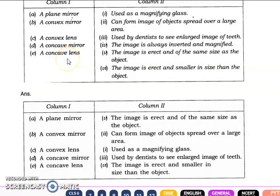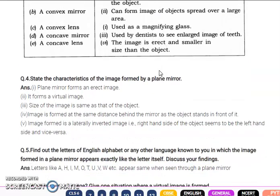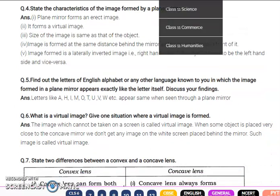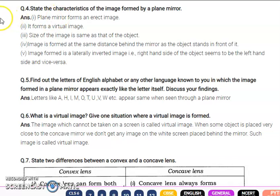Concave lens - part E. You can see option six. The image is erect and smaller in size than the object. The image is smaller in size. This is question number four.